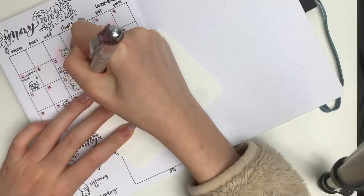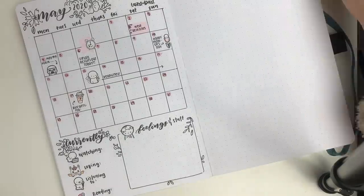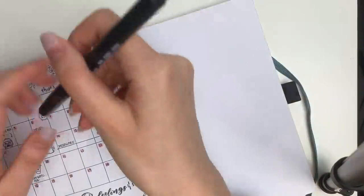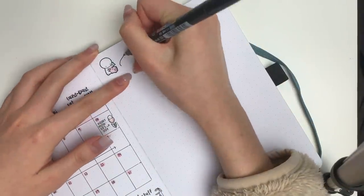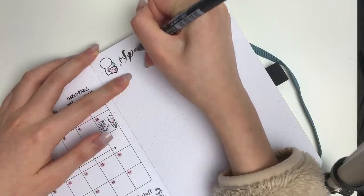After that, on the right side, I decided to make a spending tracker. Of course, it's not May yet, so I don't have the page filled out, but I just made some headings and stuff. So yeah, I hope you enjoyed this monthly setup, and I will see you next week with another Plan With Me. Bye everyone!